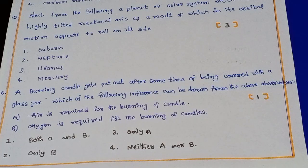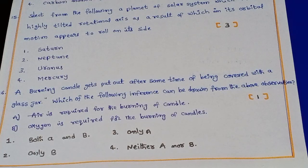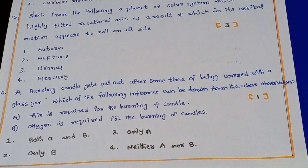Question 16: A burning candle gets put out after some time of being covered with a glass jar. Which inference can be drawn? Option A: air is required for the burning of a candle. Option B: oxygen is required for the burning of candles. Both A and B are correct answers.